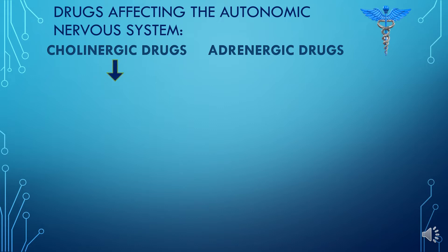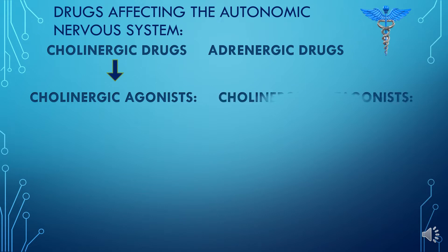The cholinergic drug is further divided into the cholinergic agonist and the cholinergic antagonist. The cholinergic agonist will enhance the activity of acetylcholine, while the cholinergic antagonist will inhibit and stop the activity of acetylcholine.